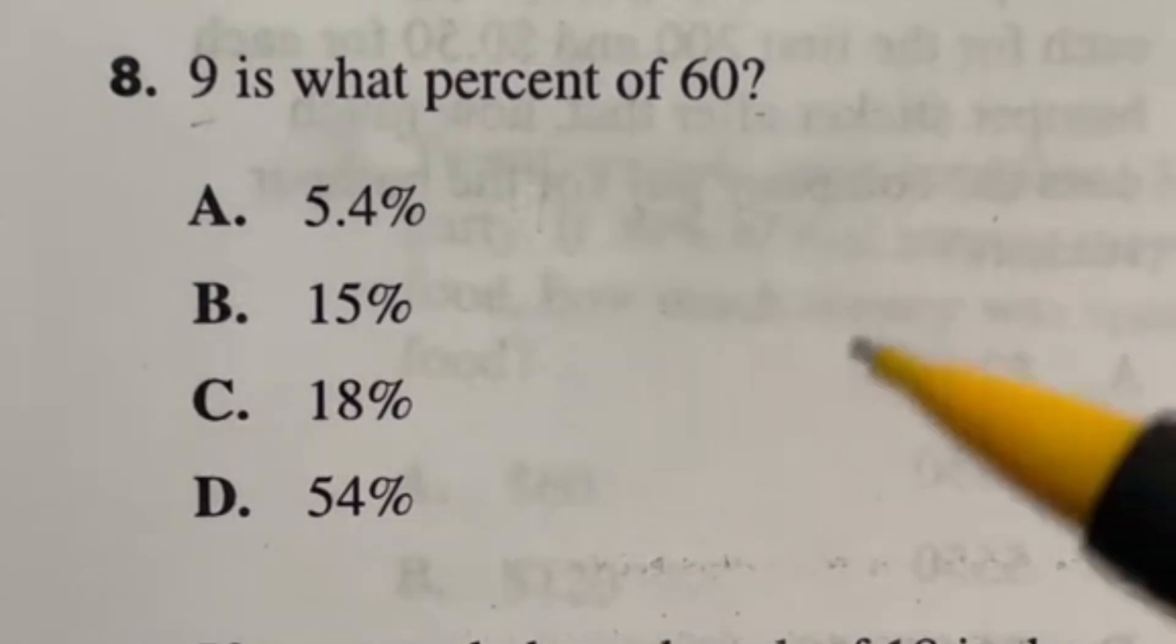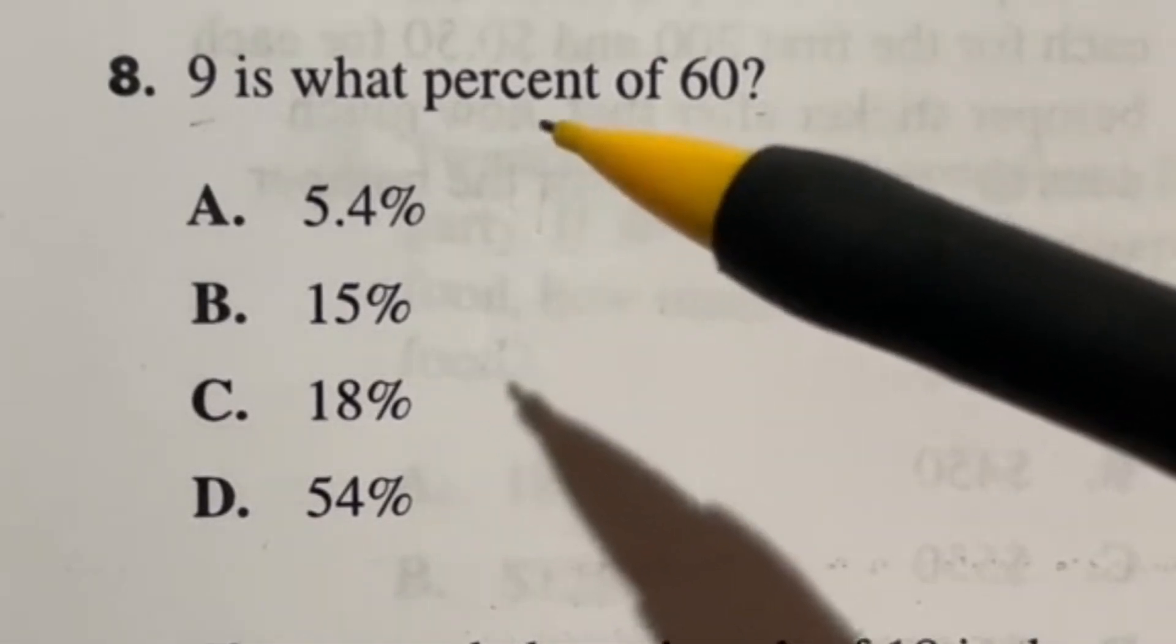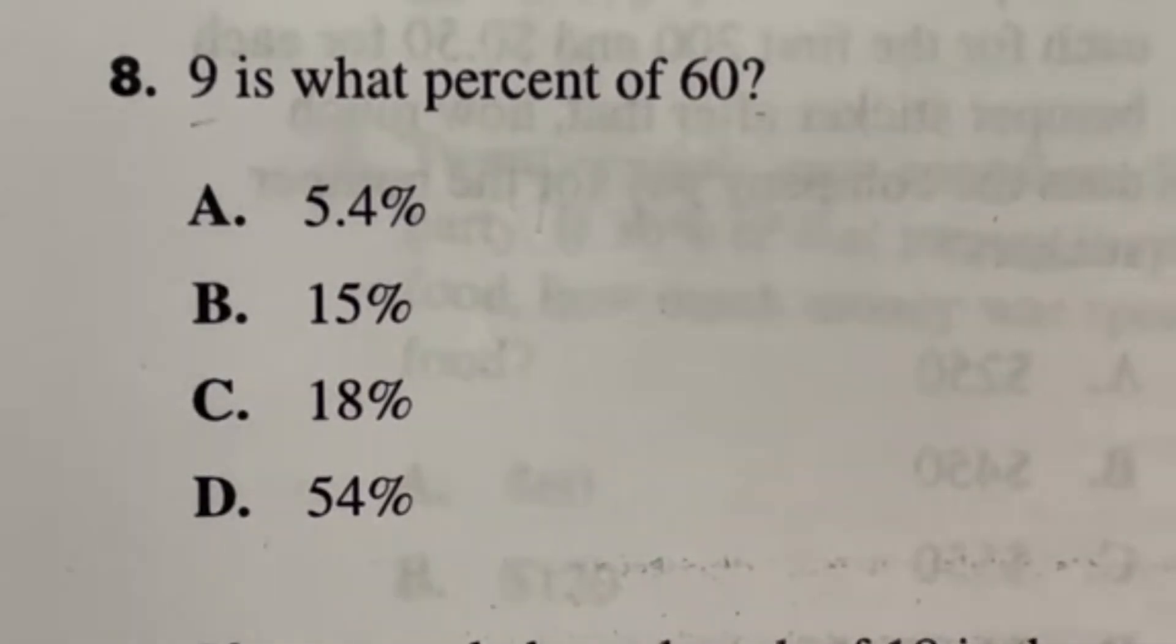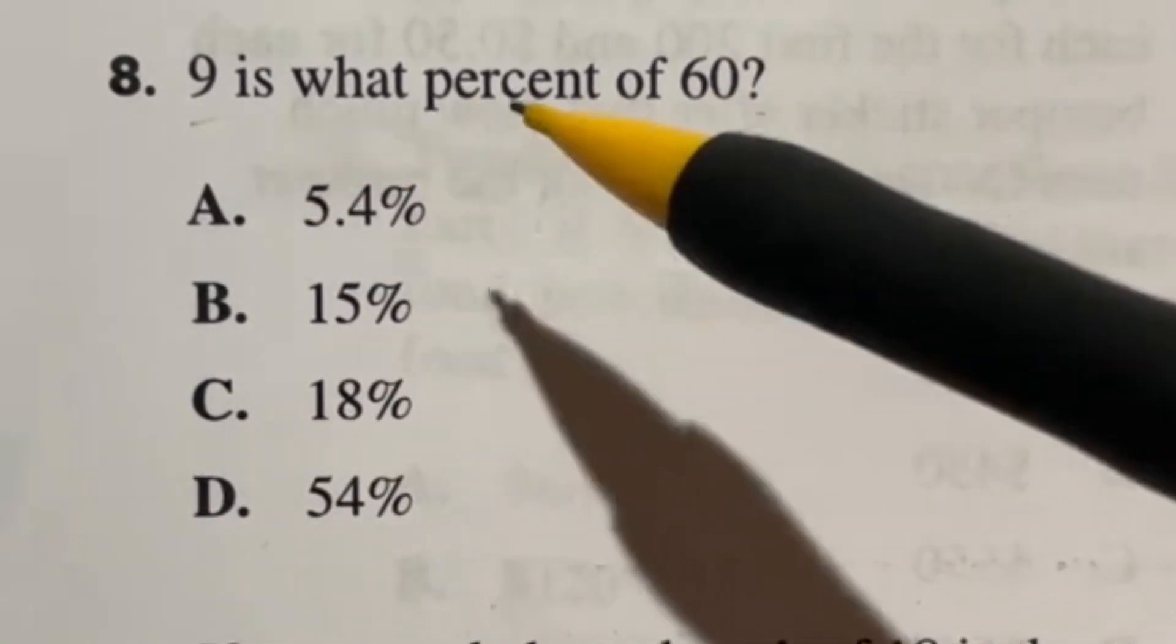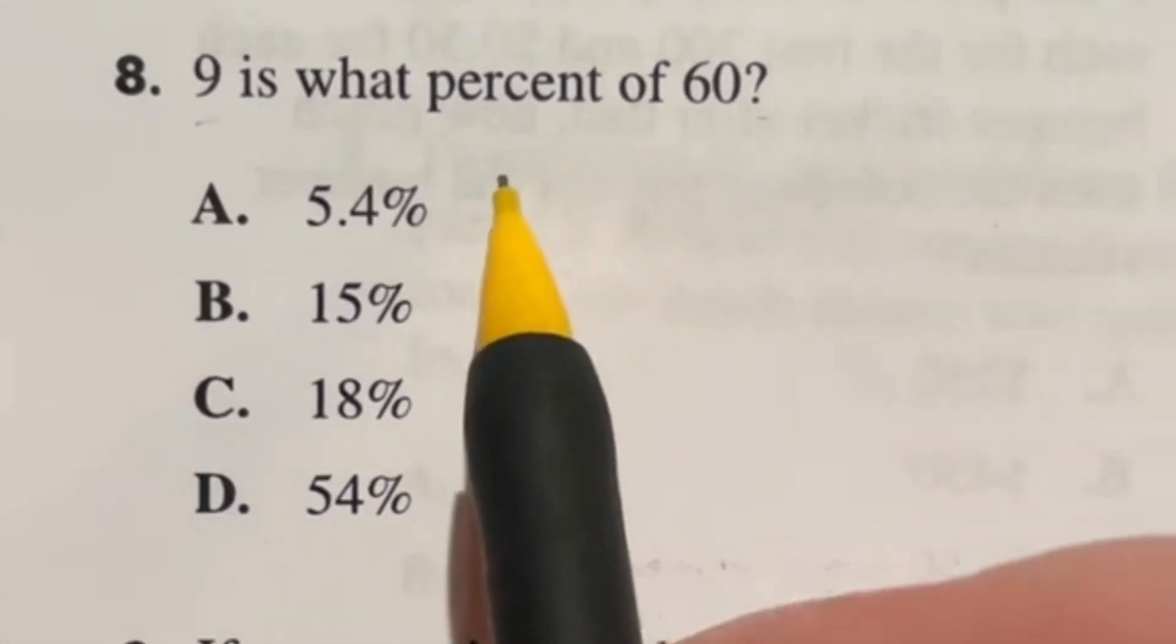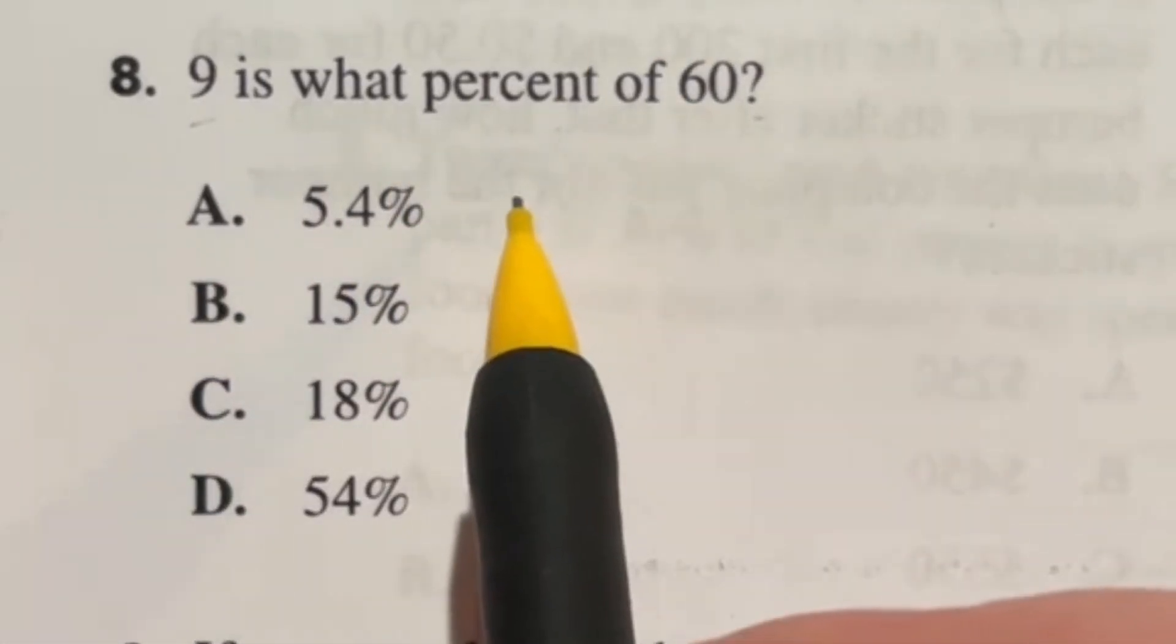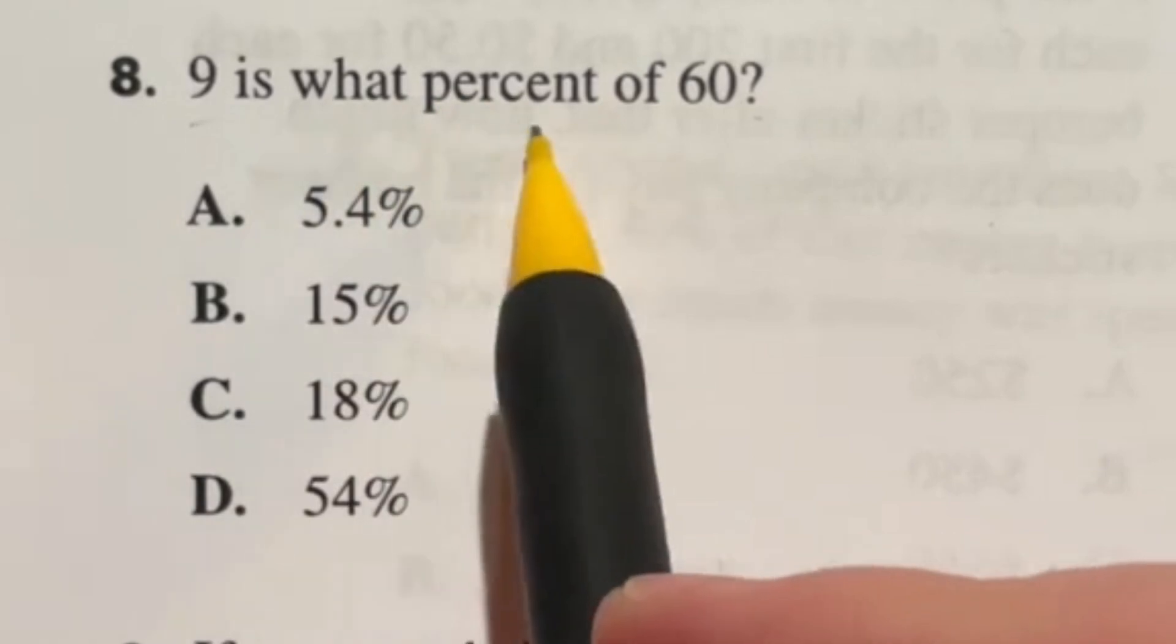So number 8 looks a little bit easier than it actually is. A lot of percent questions here are usually like what's 15 percent of 50 or like 3 is 10 percent of what number but this one actually doesn't give you the percent. It says 9 is what percent of 60. So in this case if you're thinking about this you're really just dealing with the fraction and moving it into the decimal and then into the percent form.